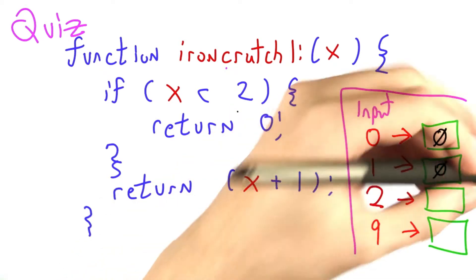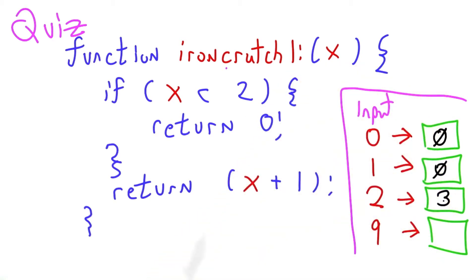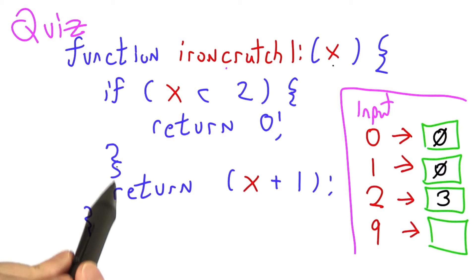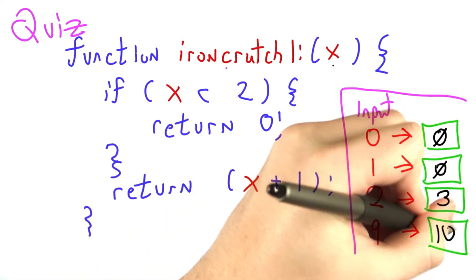So we're going to return 2 plus 1, or 3. And then over here if we pass in 9, 9 is not less than 2, so we're going to return 10.